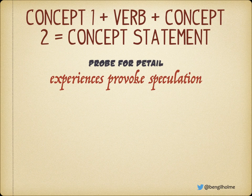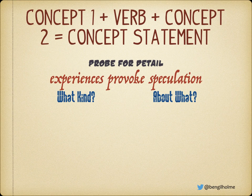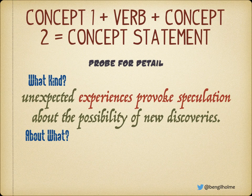We've got: experiences provoke speculation. We find the detail in the concepts by asking a relevant question about each one. So for 'experiences,' the question is: what kind of experiences? And for 'speculation': speculation about what? Once you've got the answers, that gives you the detail you need to flesh out the sentence. What kind of experiences? Unexpected experiences. Speculation about what? About the possibility of new discoveries. So that gives us the statement: unexpected experiences provoke speculation about the possibility of new discoveries.